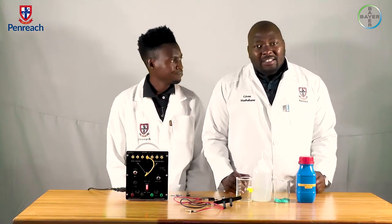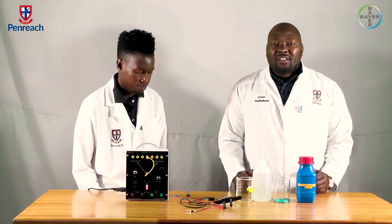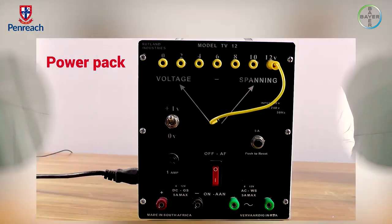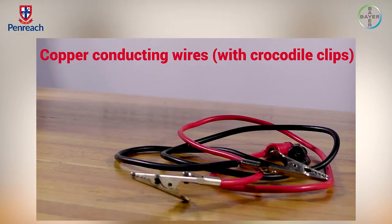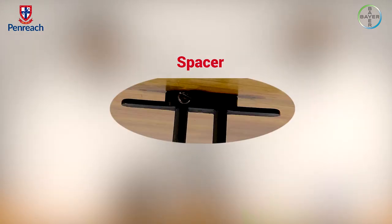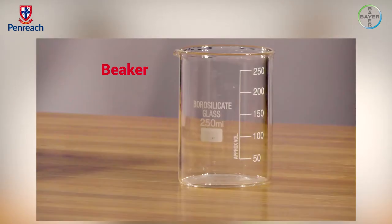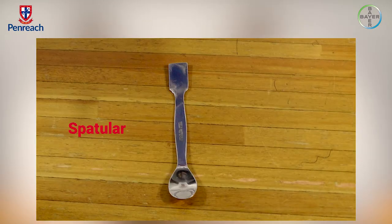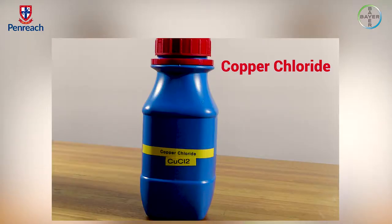Now, the apparatus that we are going to be using for this experiment are power pack, connecting wires, graphite electrodes, a spacer, beaker, spatula, and copper chloride.